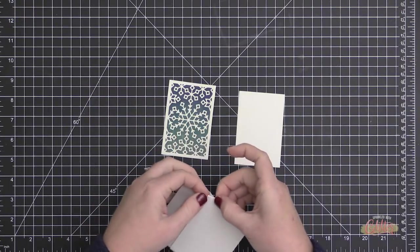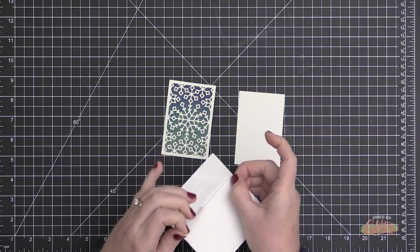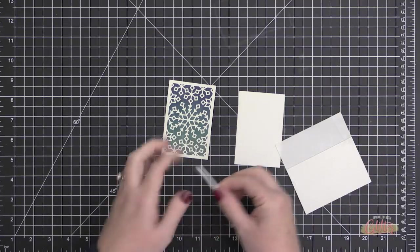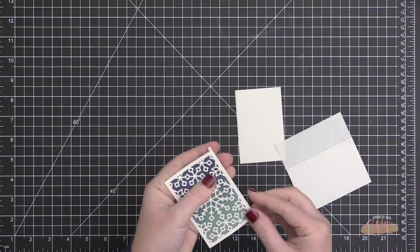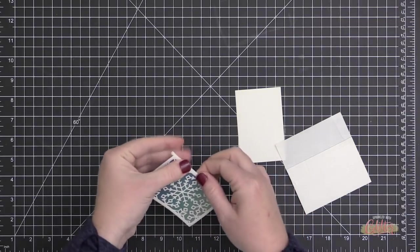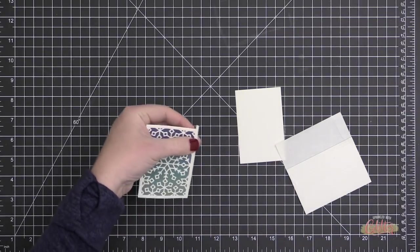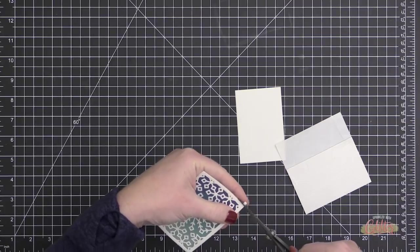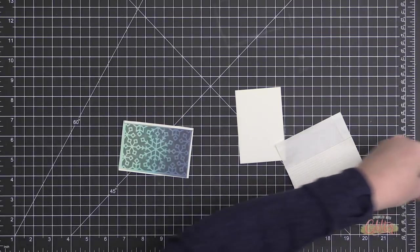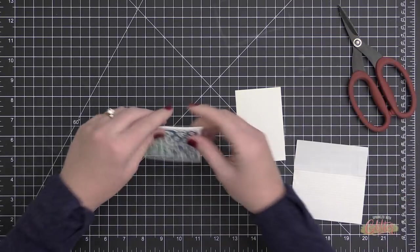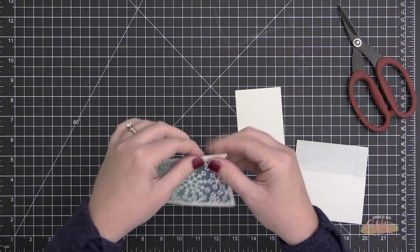Now what I love about this die is that you can use it for Christmas, but it lasts all winter long too—it's not just a Christmas product. Now in order to make this a gift card holder, I'm going to turn this into a pocket, and I'm doing that with some really thin strips of foam adhesive.